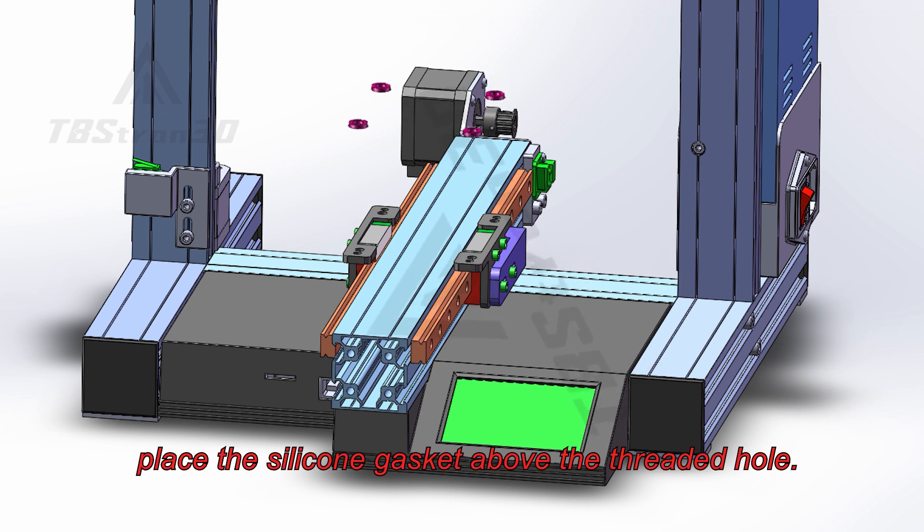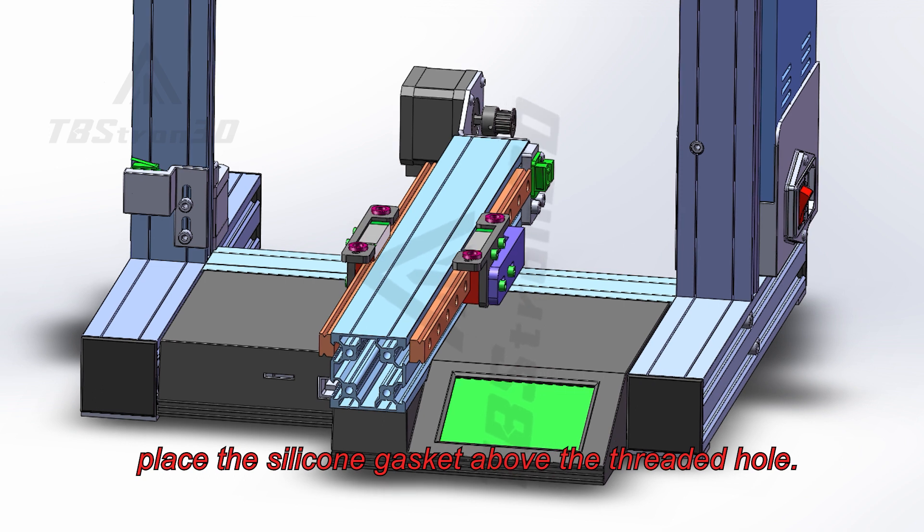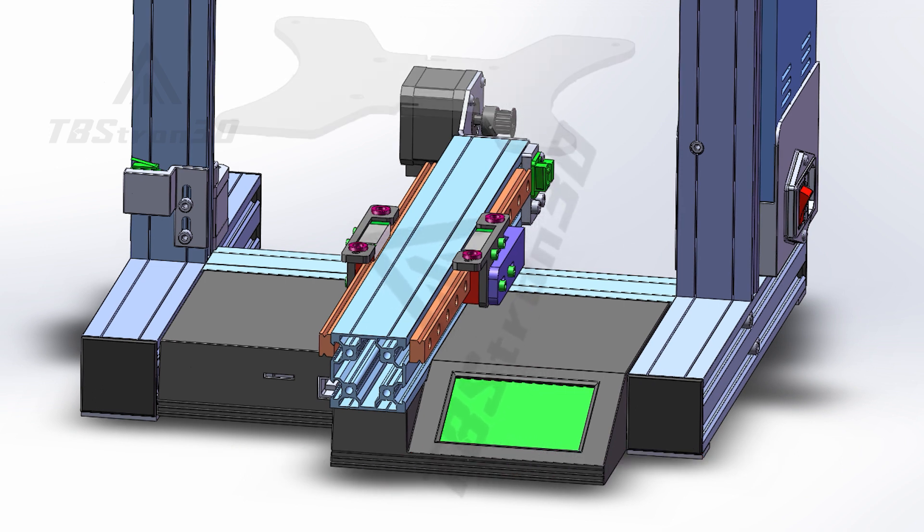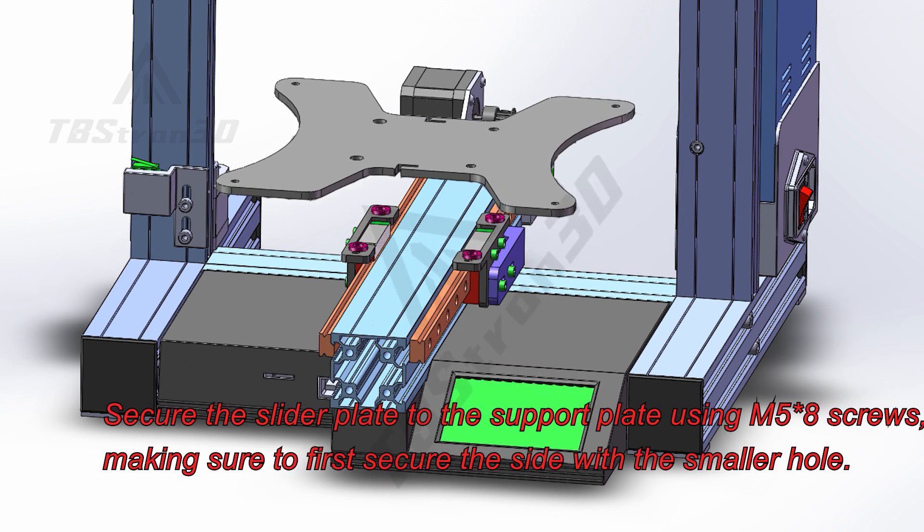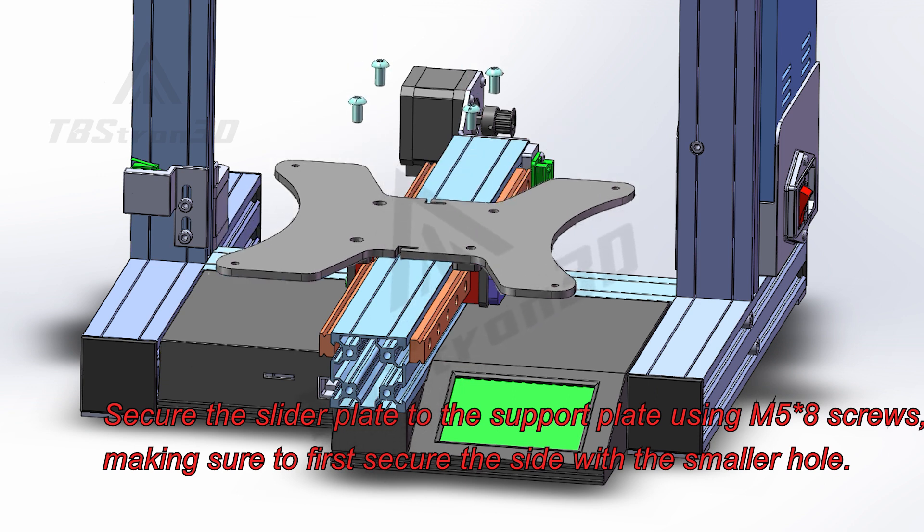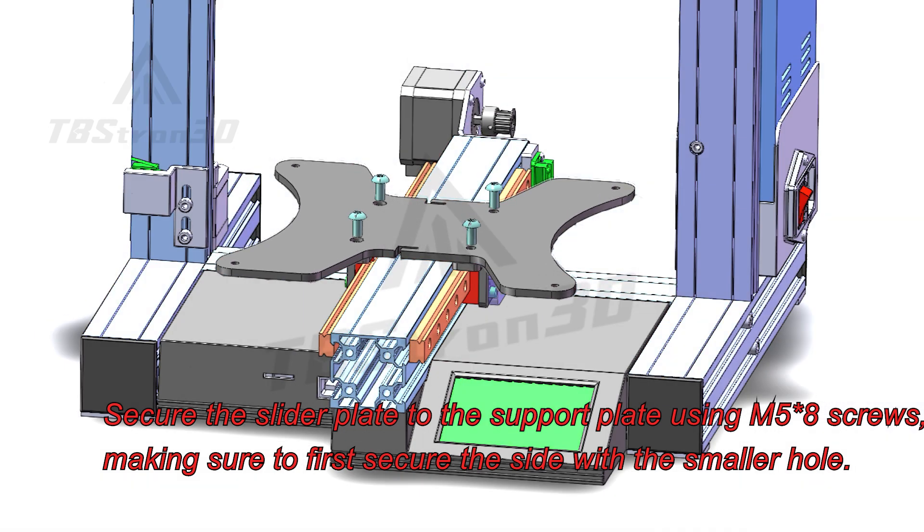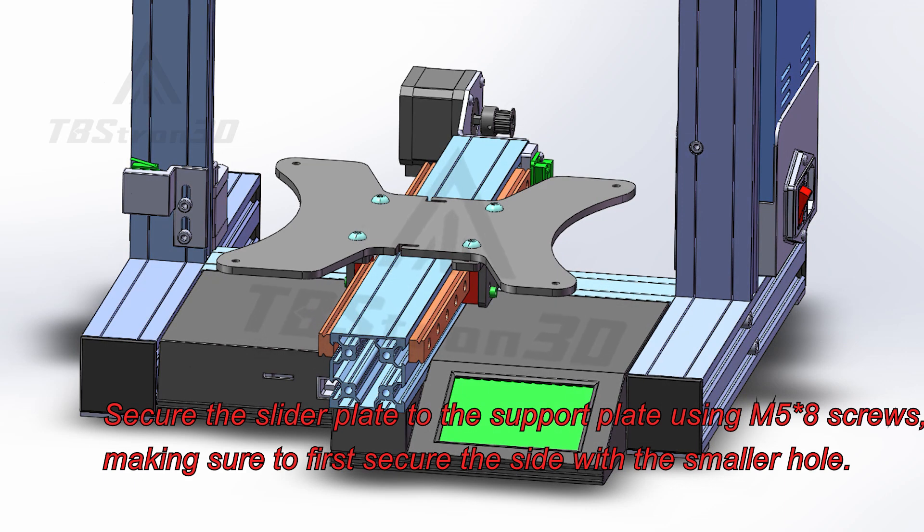Place the silicone gasket above the threaded hole. Secure the slider plate to the support plate using M58 screws, making sure to first secure the side with the smaller hole.